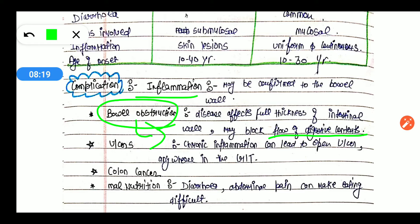The bowel obstruction means that the disease affects full thickness, so the bowel wall that can cause bowel obstruction. So what can happen? This can block the digestive component, meaning we can also have blockage in the GIT area from the stomach onwards. So this is our bowel obstruction.